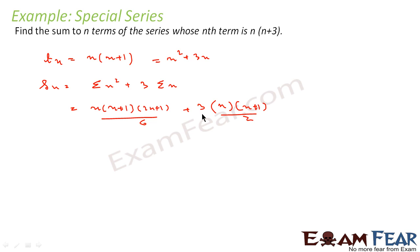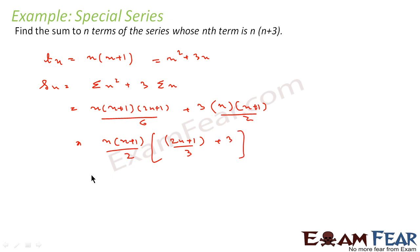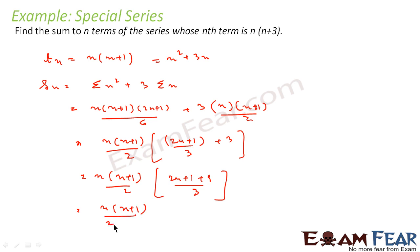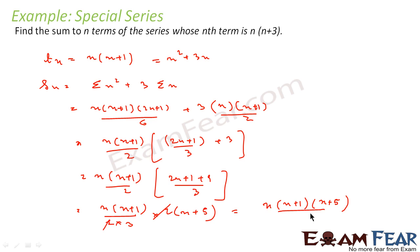Now we can take n(n+1) common, factoring out n(n+1)·(1/2). This becomes (2n+1)/3 + 1. So Sn = n(n+1)/2 × (2n+1+9)/3 = n(n+1)/2 × (2n+10)/3. Taking 2 common from (2n+10) gives (n+5), and the 2 cancels. So our answer is n(n+1)(n+5)/3. We know tn; to find Sn you just apply summation to each term and we get this answer.